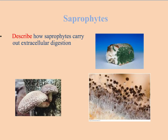The next group we're going to look at are the saprophytes, sometimes known as the saprobionts. The saprobionts carry out extracellular digestion, so they secrete enzymes out onto their food.